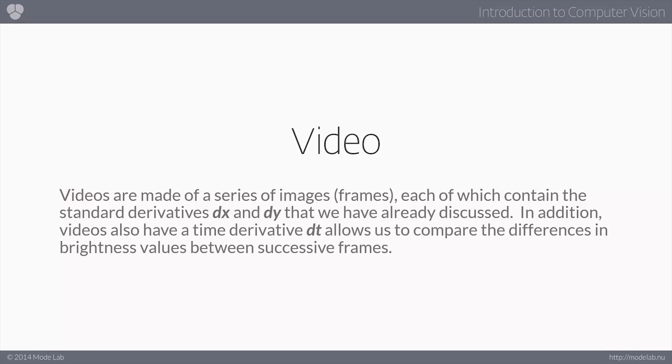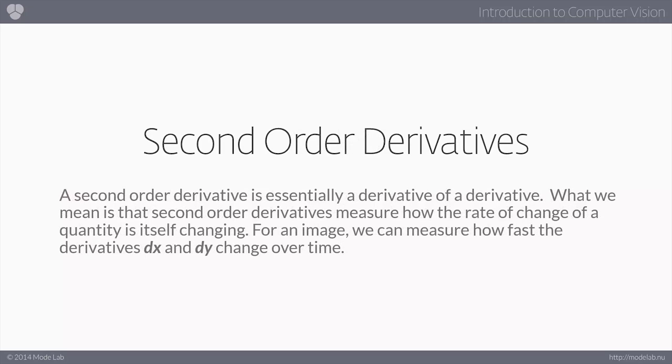Videos are basically made from a series of still frames, each of which contain the standard derivatives of dx and dy that we've already been discussing. However, in addition, videos also have a time derivative, which allows us to compare the differences in the brightness values between successive frames.